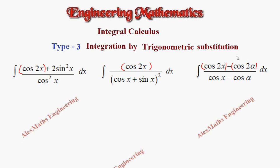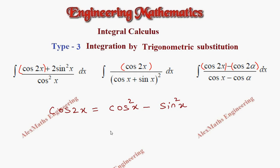For cos 2x there are four formulas, so let's write the first three. cos 2x is nothing but cos²x − sin²x, then 2cos²x − 1, then 1 − 2sin²x. Another one is in terms of tan, but we are not going to use it now.